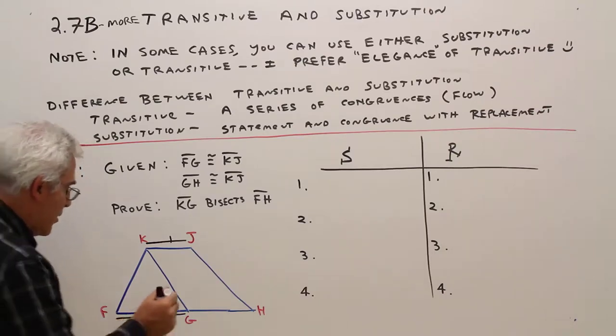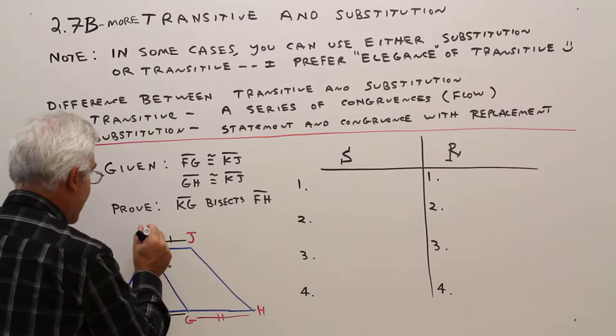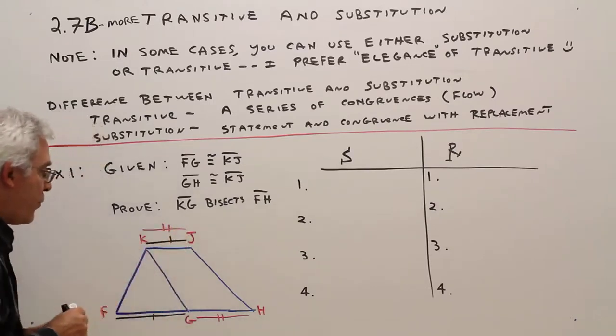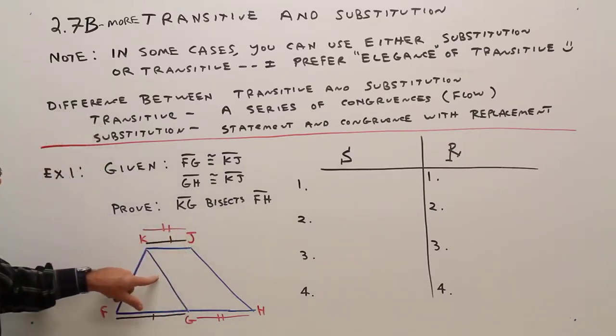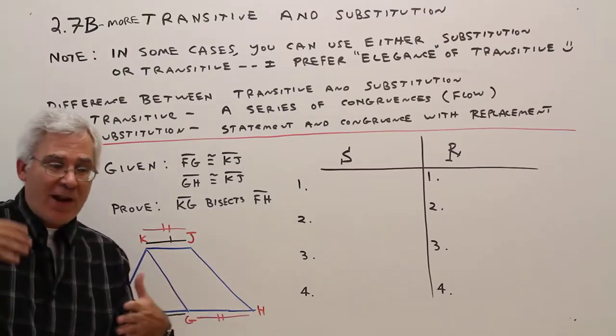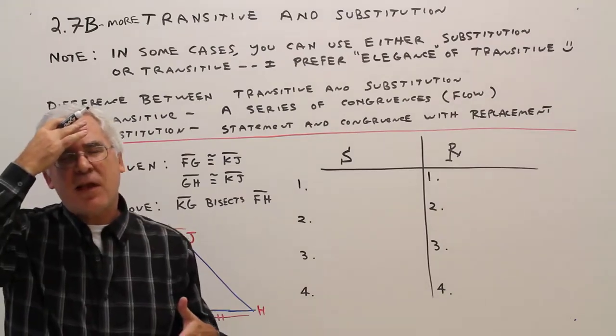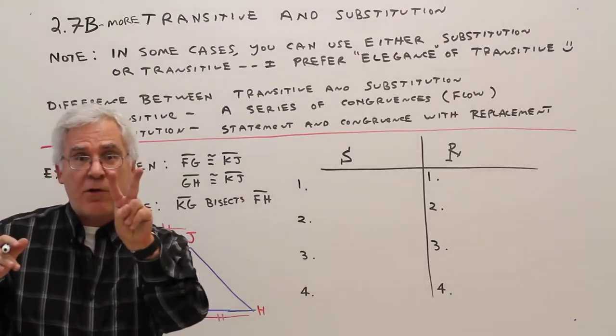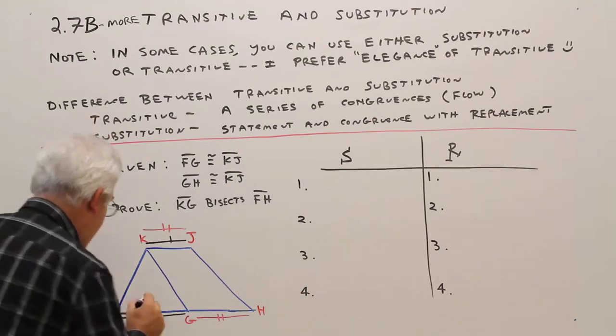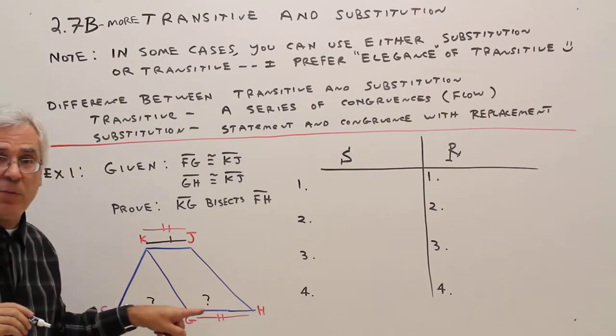GH is congruent to KJ. Prove that KJ bisects segment FH. Now we've got to remember those definitions. To show that something bisects a segment, I need two congruent segments. So what I really need to do is prove that this segment is congruent to that segment.